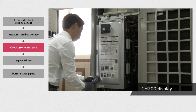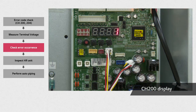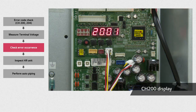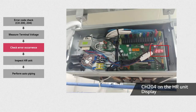Then disassemble the control box cover of the outdoor unit. You can check the error number on the ODU's PCB. If it is error CH200, the number 200 will be displayed on the PCB screen. You can also check if it is error CH204 by looking at the screen of the ODU's PCB — this is a communication error between the ODU and the HR unit. You can also check the error number at the HR unit's 7-segment display.